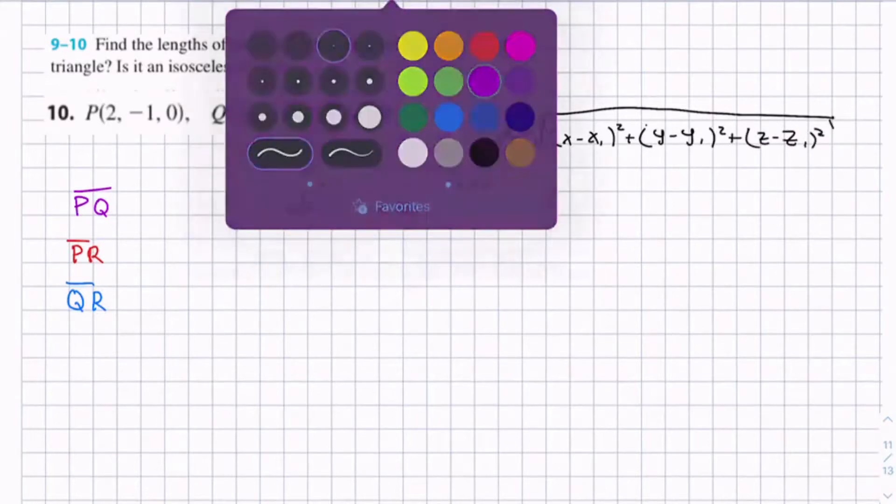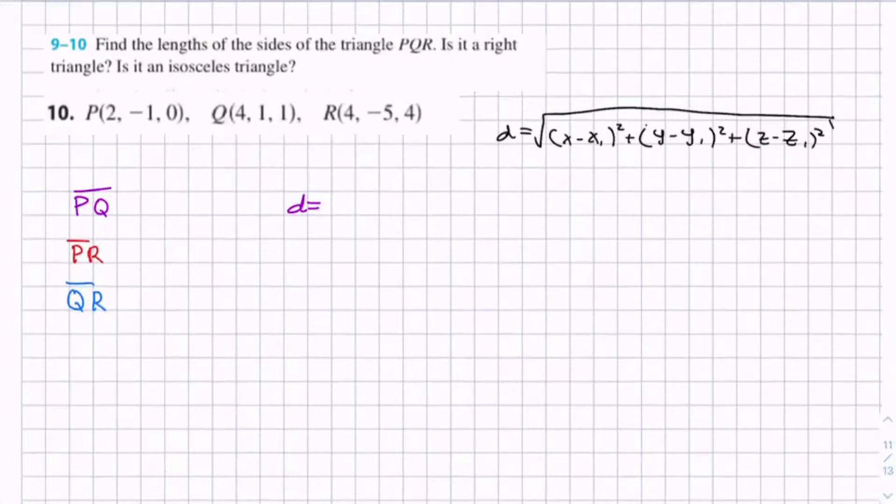So now if we apply those to our segments, for PQ we would get (4 - 2)² plus (1 - (-1))², which is plus 1², plus (1 - 0)². And this equals the square root of 2², which is 4, plus 2², which is 4, plus 1, which is square root of 9, so this equals 3.